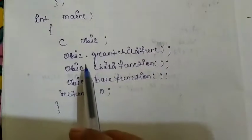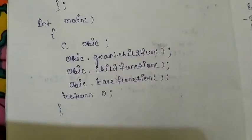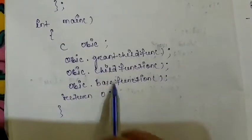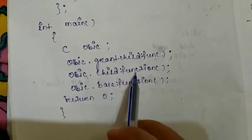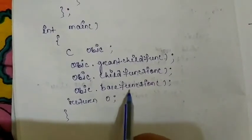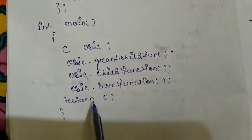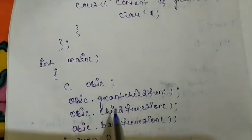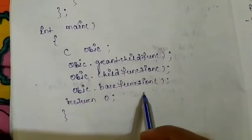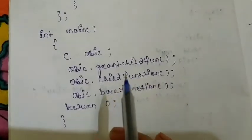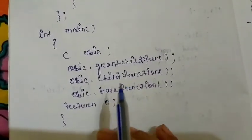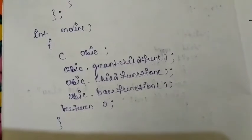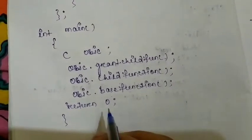Now in the main function, we are creating an object of class C. Using this object, you can call each function — this is the function of the grandchild, this is the function of the child or class B, and this is the function of the base class A. The output will be: content of grandchild, then content of child function, then content of base function. You can take any examples of multi-level inheritance and implement it in more complex forms. Thank you.